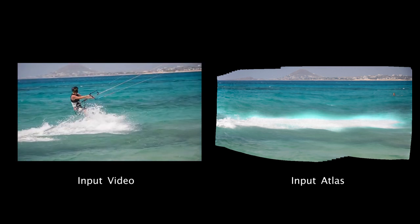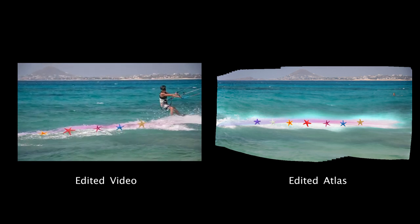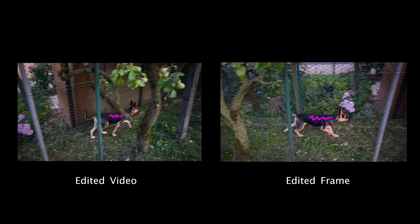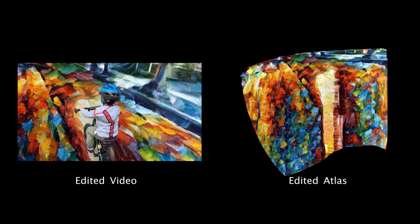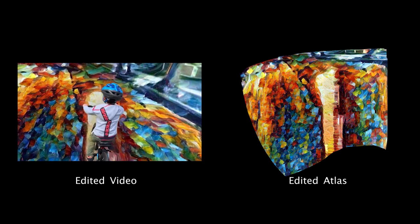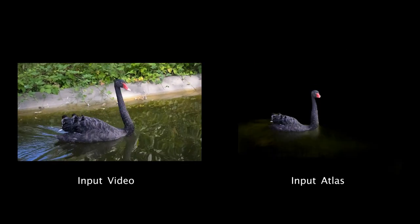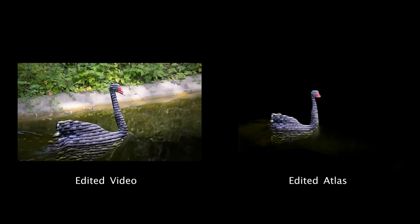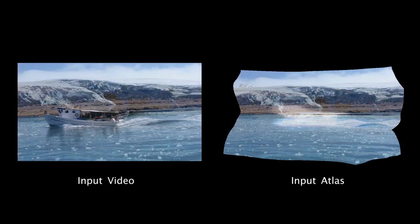Here we show some results of edited videos using our approach. In each case, only a single image was edited. These edits are done by directly drawing on the input atlas or frame, or by using existing image editing operations like neural stylization. We can even change the background of a scene by replacing the atlas with another image entirely.